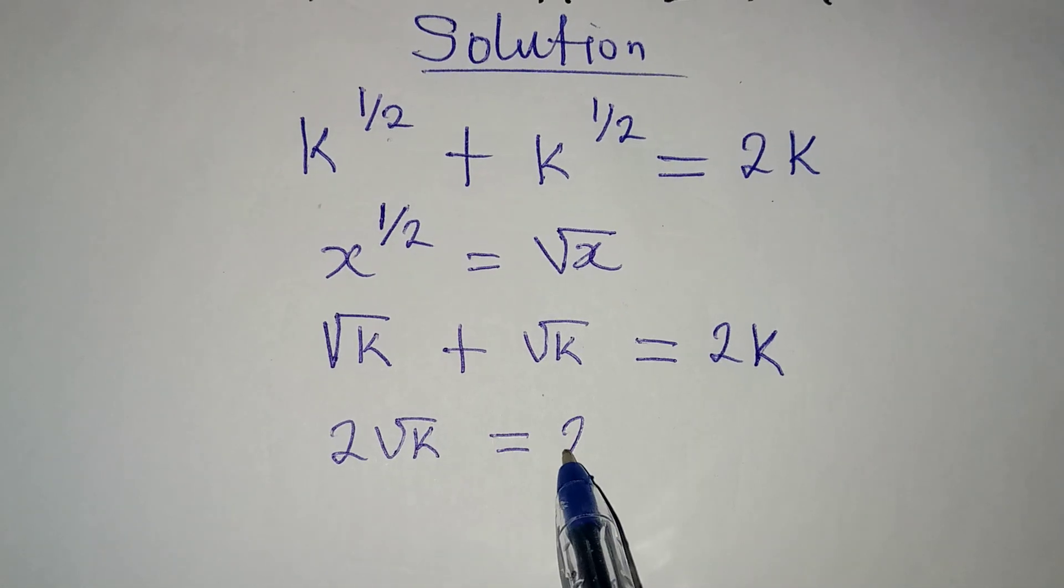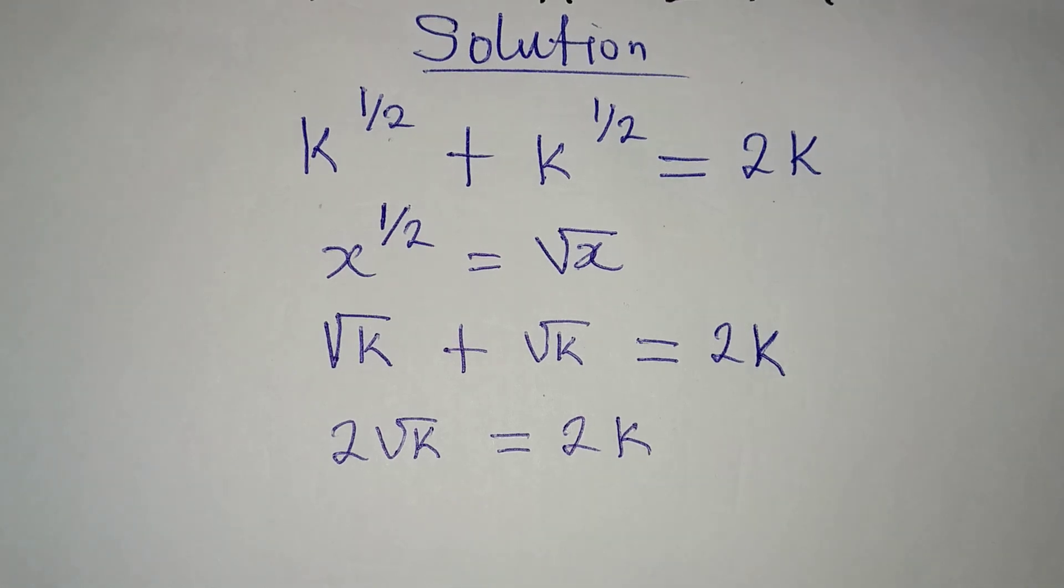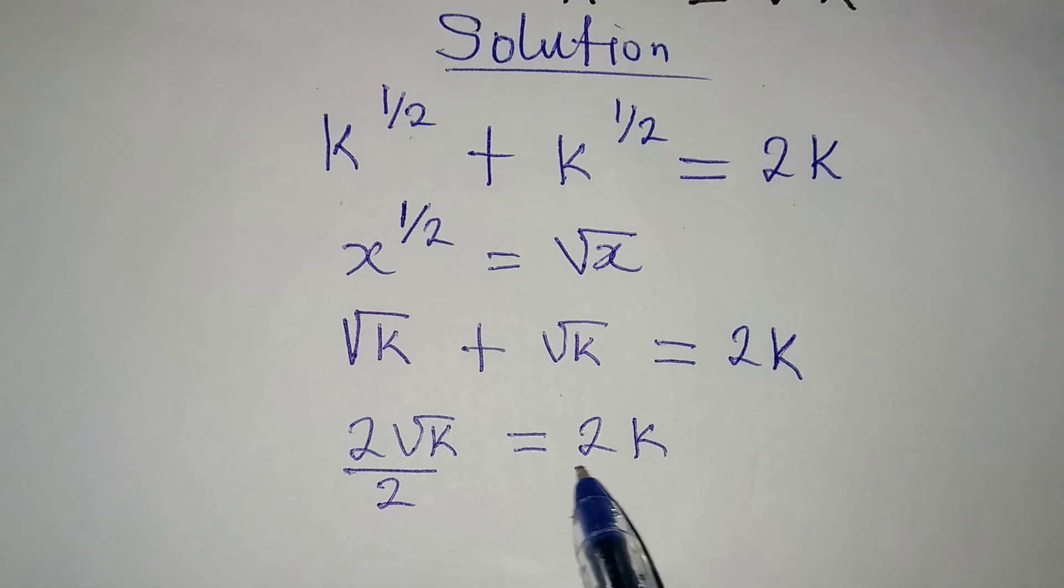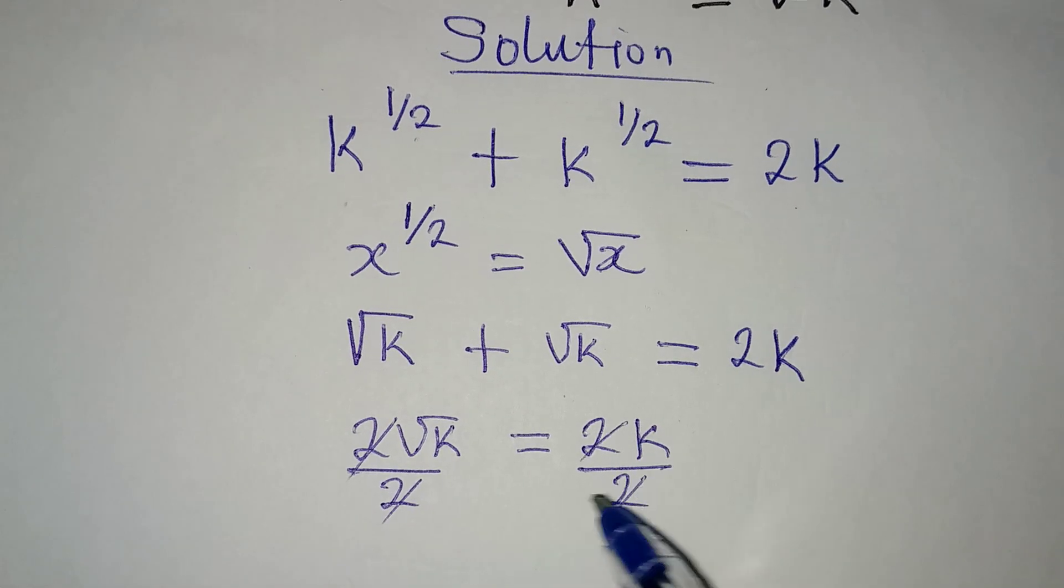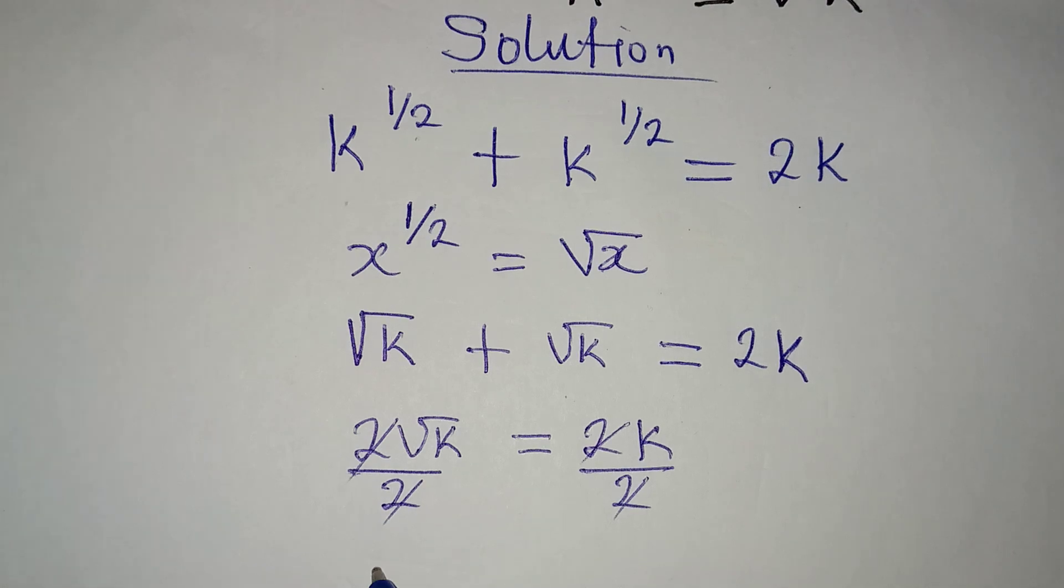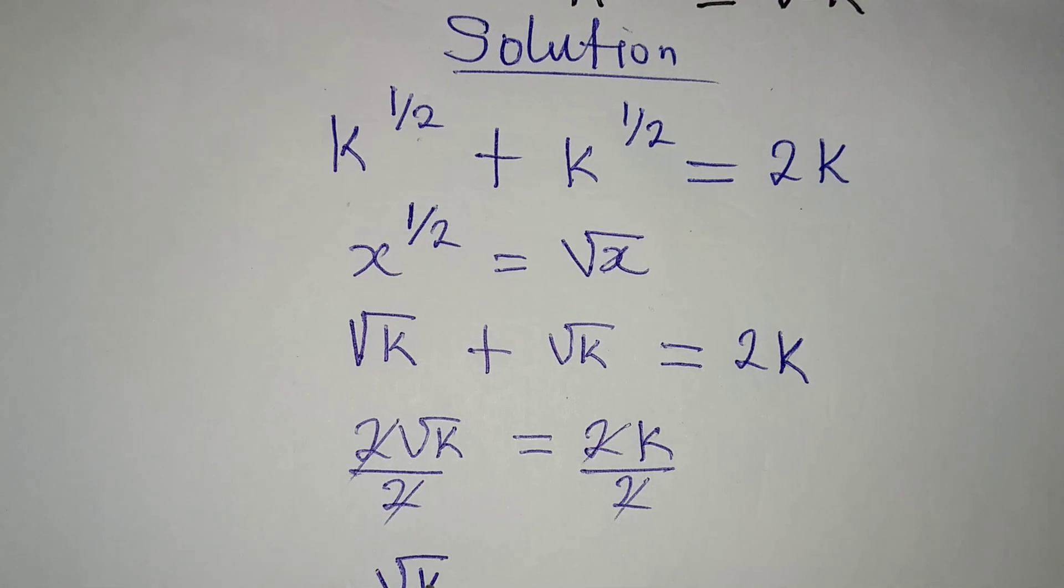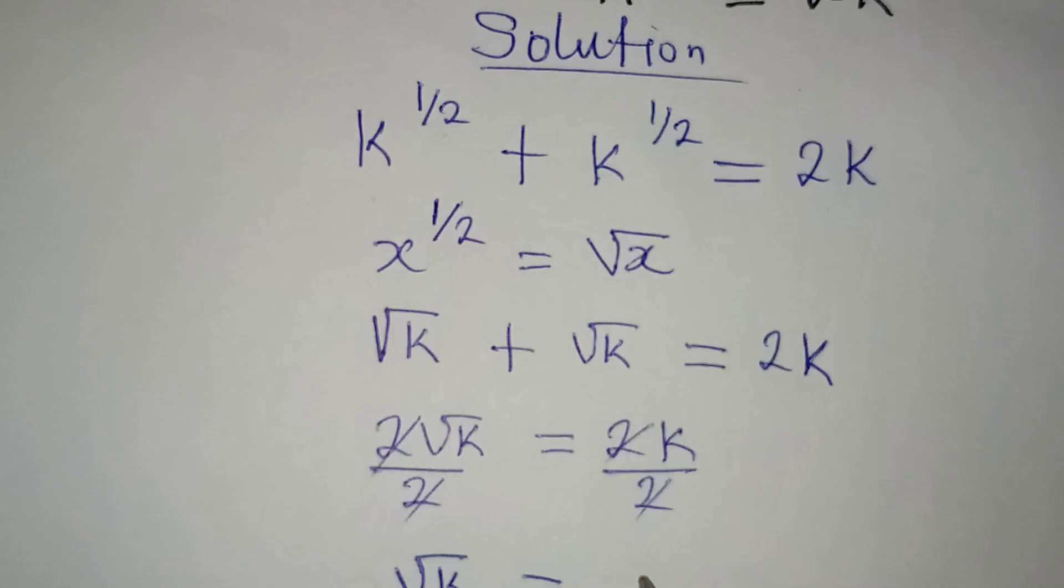Which will be equal to 2k. And from here we can just divide both sides by 2, so that this will cancel this and it will also cancel this, so square root of k is equal to k.